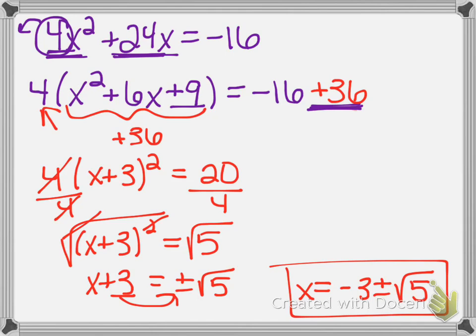If you're grouping these two terms together and pulling the 4 out in front, you can't pull it out of the 16 too — the 16 is not in the group with them, it's off on its own. That is one of the most common reasons I saw people miss that on the quiz.